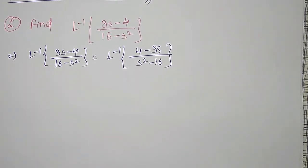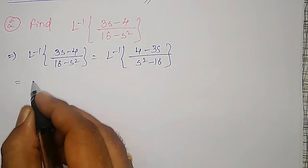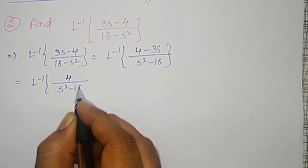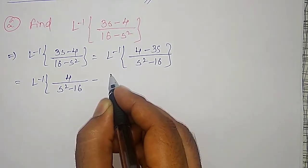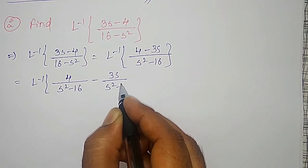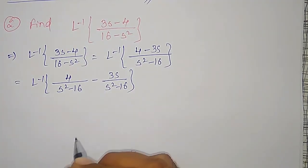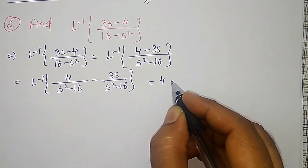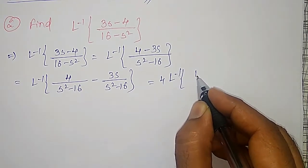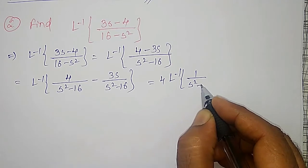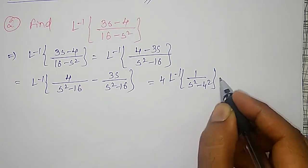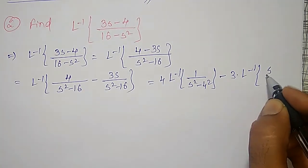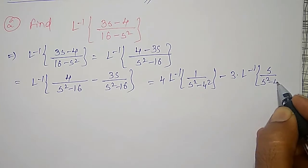Now I can write this as: inverse Laplace transform of 4/(s² - 16) minus 3s/(s² - 16). Using the linear property, I can separate: 4 times inverse Laplace transform of 1/(s² - 4²), minus 3 times inverse Laplace transform of s/(s² - 4²).